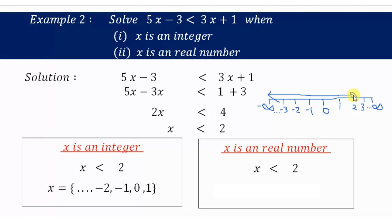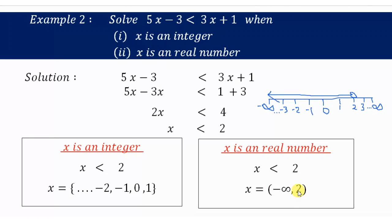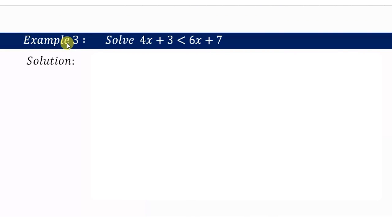All values before 2 are included in the set, so we write the solution as negative infinity to 2, using parentheses to show we are NOT including 2 and NOT including negative infinity. Numbers like 1.9 and 1.99 are included — everything up to but not including 2, down to negative infinity.